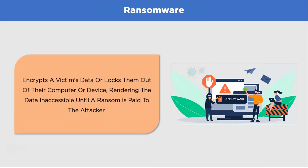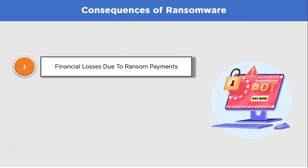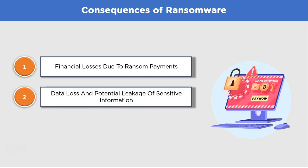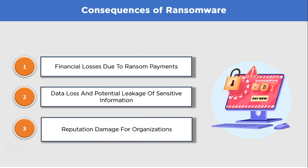Third on the list, we have ransomware. Ransomware is a type of malware that encrypts a victim's data, making it inaccessible until a ransom is paid to the attackers. It affects individuals, businesses, and government organizations worldwide. Ransomware often uses strong encryption algorithms to lock victims' data and may be delivered through malicious email attachments, compromised websites, or exploit kits. In 2021, the Colonial Pipeline in the United States fell victim to a ransomware attack, leading to the shutdown of operations and a ransom payment to the attackers. Consequences include financial losses due to ransom payments, data loss and potential leakage of sensitive information, and reputation damage for affected organizations.